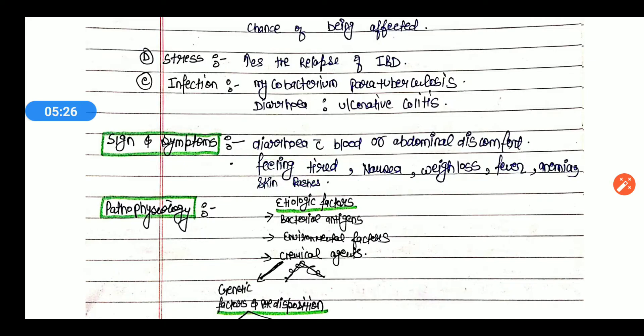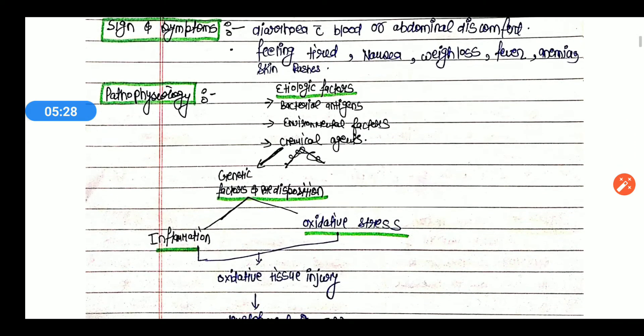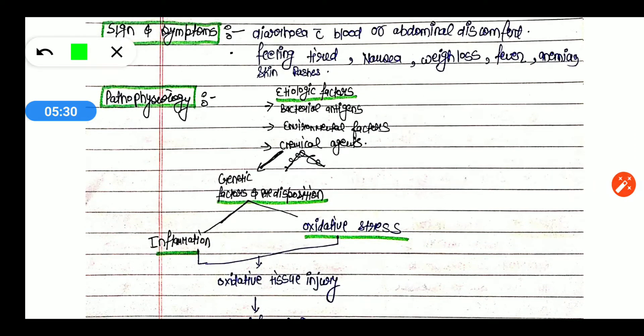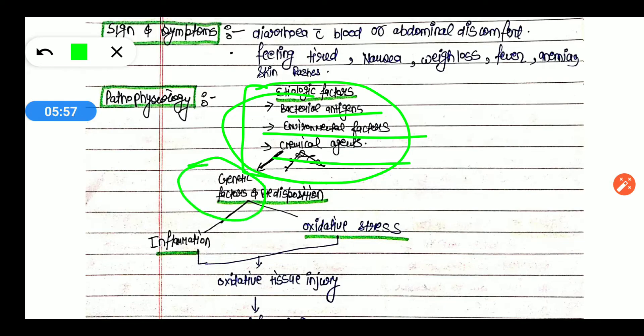The main part is its pathophysiology. If we talk about its pathophysiology, then first of all, the main factors of the pathophysiology are responsible for IBD. In etiological factors, bacterial antigens, environmental factors, and chemical agents cause IBD. So these are all factors. One we have seen is genetics, meaning from one generation to another. So genetic factors and these factors can cause IBD through two conditions.